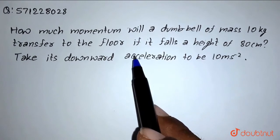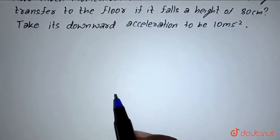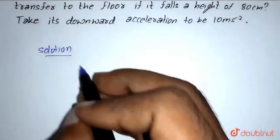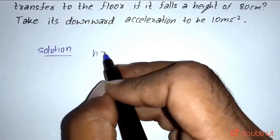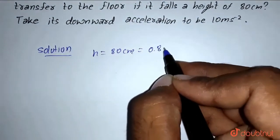So basically we have to find the momentum which will transfer to the floor, for which we have to find the velocity at which it was when it hit the floor. So the solution: it is given that height is 80 centimeter, that is 0.8 meters.